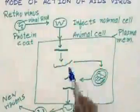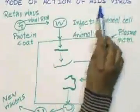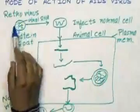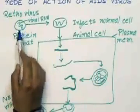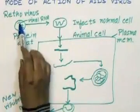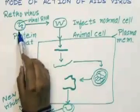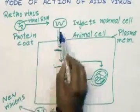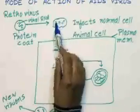Let us discuss the mode of action of the AIDS virus. HIV, as we know, is a retrovirus. As you can see here, this is the viral RNA and this is the protein coat. It infects normal cells.